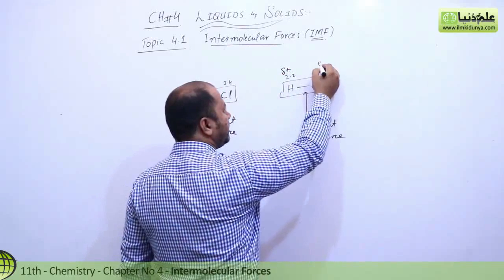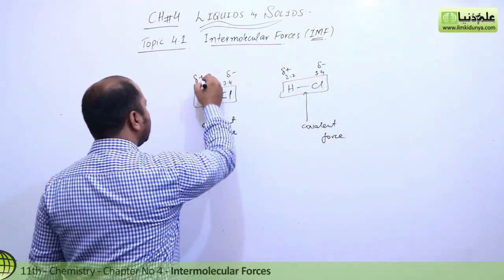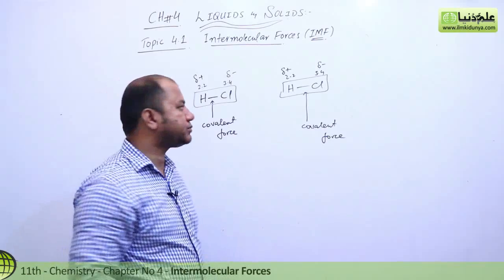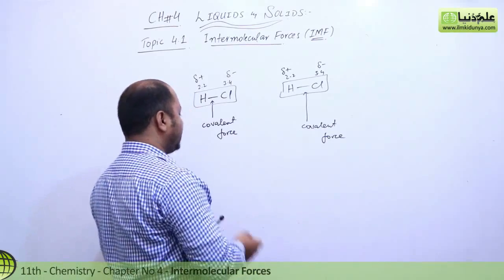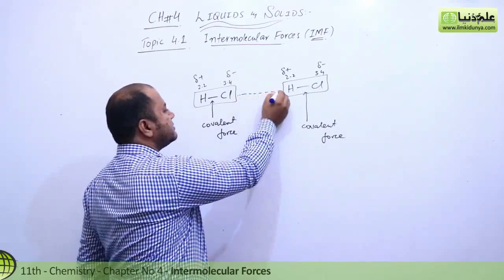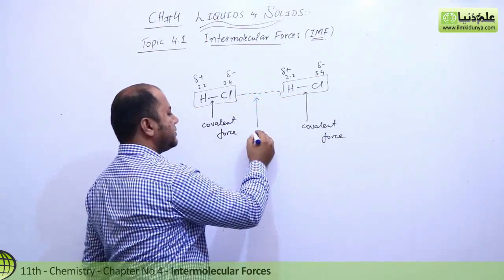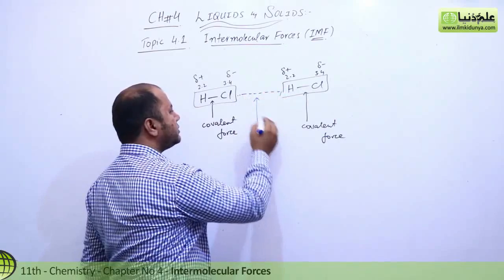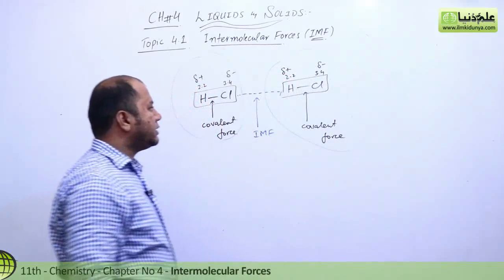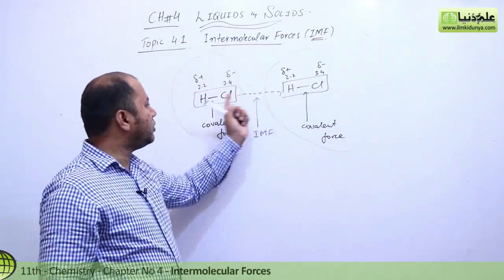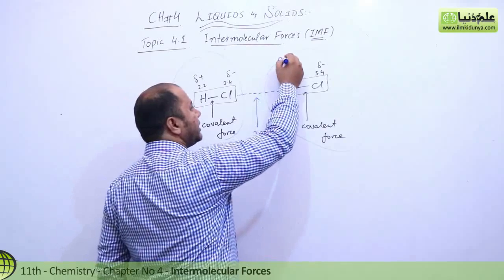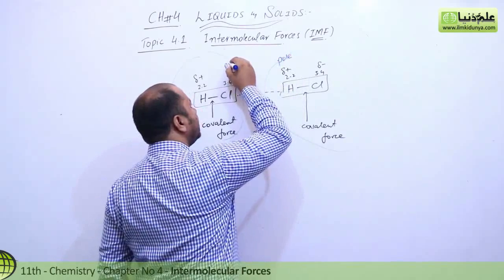Partial positive charge, partial negative charge, partial positive charge, partial negative charge. Now because of these partial positive and negative charges, students, a force will be generated between them. Okay? Now the force that will be there is known as IMF, right? Intermolecular force. Here we have a force, here we have a force, that is known as IMF. So now between two molecules there is a force.